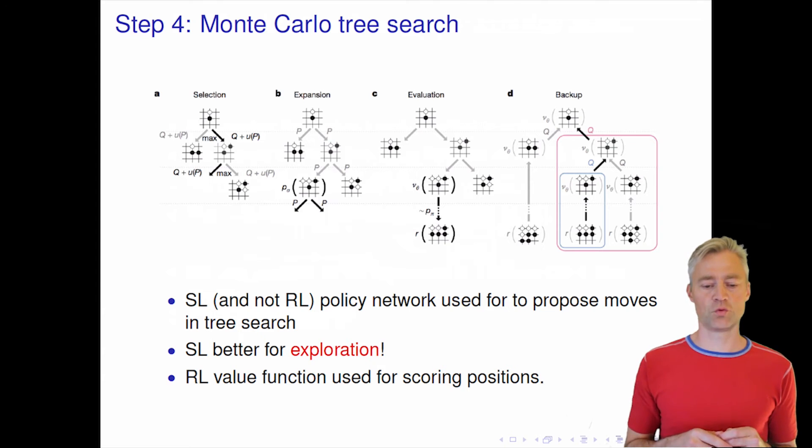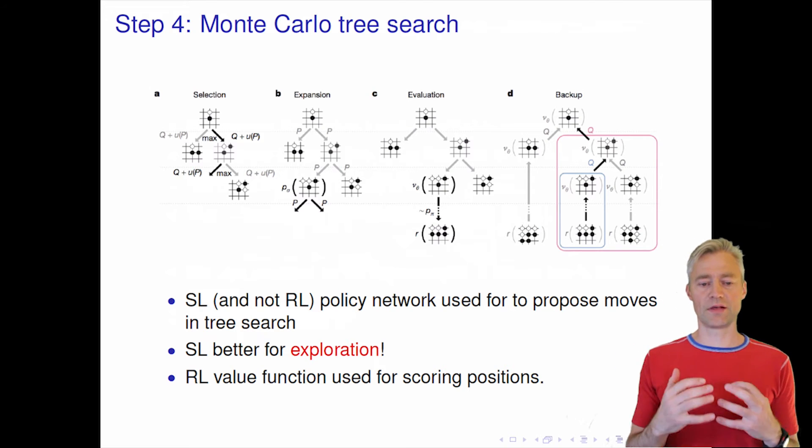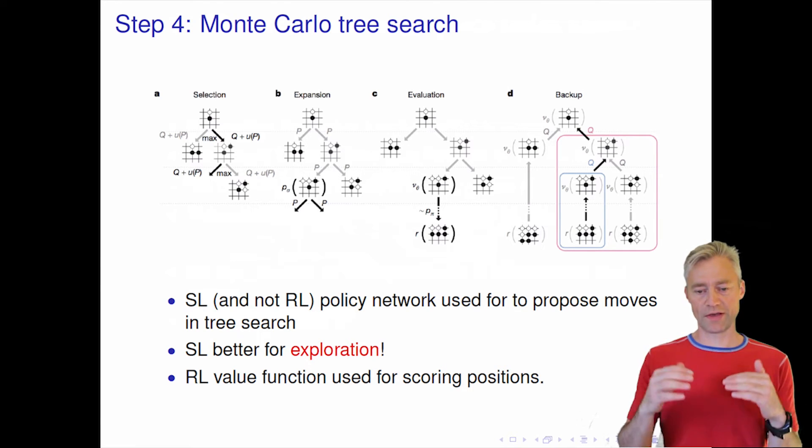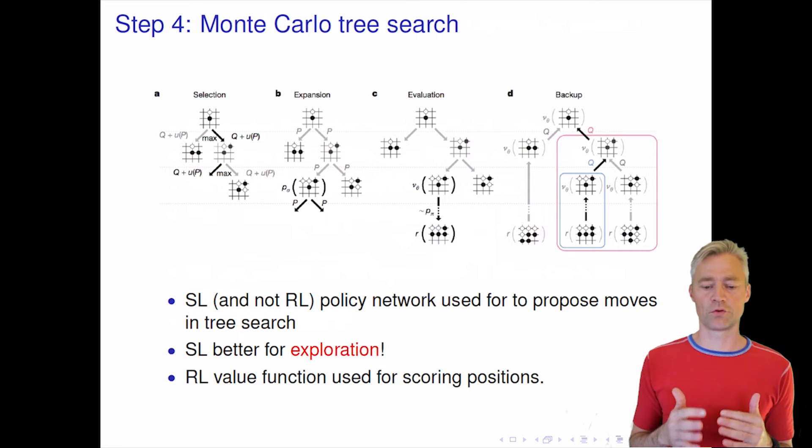The fourth step, I will not talk so much about because it's kind of technical details, but it's essentially an intelligent way to do a stochastic search. We eventually use the value network to decide which is a good position to reach, but we will use our policy networks to decide what moves we will use.